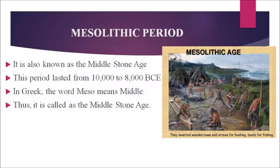The Mesolithic period is also known as the Middle Stone Age. This period lasted from 10,000 to 8,000 BCE. In Greek, the word 'meso' means middle, and 'lithos' means stone — thus it is called the Middle Stone Age.